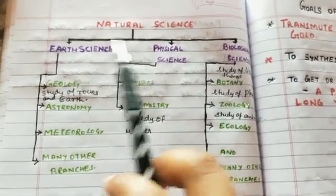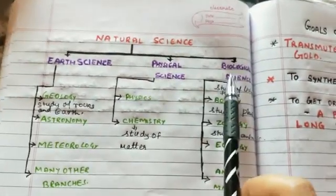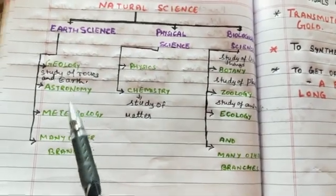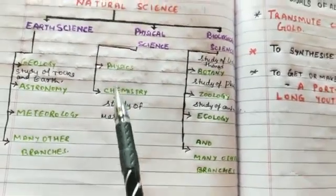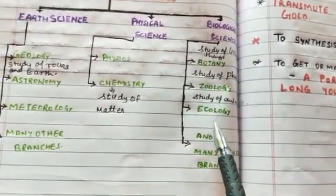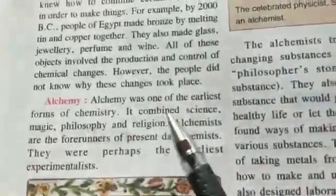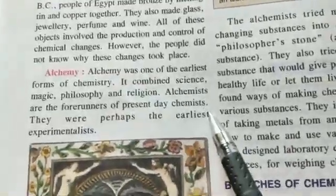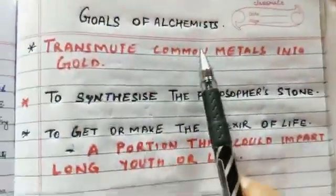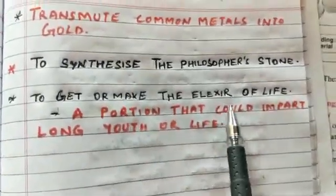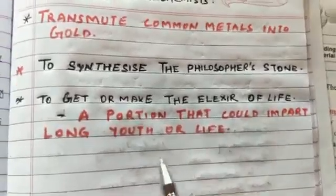Let's do a small revision of what we have learned today. Natural science is divided into three parts: earth science, physical science, and biological science. Earth science includes geology, astronomy, and meteorology. Physical science includes physics and chemistry, and biological science includes botany, zoology, and ecology. We also learned that alchemy was one of the earliest forms of chemistry, combining science, magic, philosophy, and religion. Alchemists are the forerunners of present-day chemists, and their main goals were to transmute common metals into gold, synthesize the philosopher's stone, and make the elixir of life.